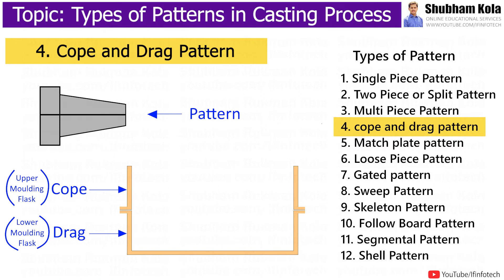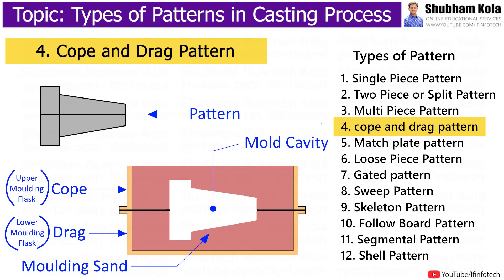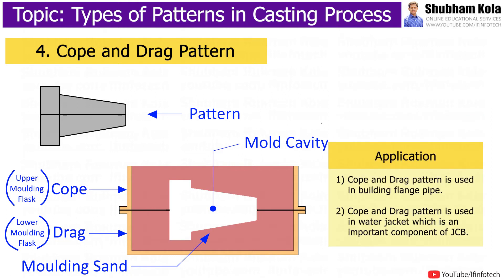A cove and drag pattern is a split pattern having cove and drag portions, each mounted on separate matchplates. These two separate parts are combined to form the entire cavity. Cove and drag pattern is almost like two-piece pattern. This pattern type is used in production of large castings where moulds are heavy and unhandy for users. It is used in building flank pipes and also in water jackets, which is an important component of JCB.